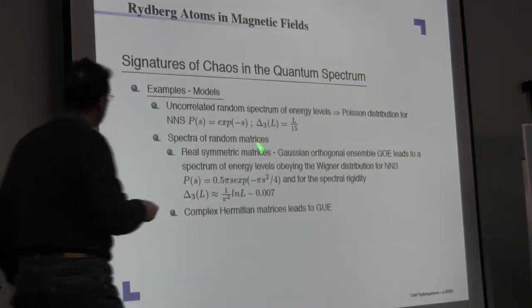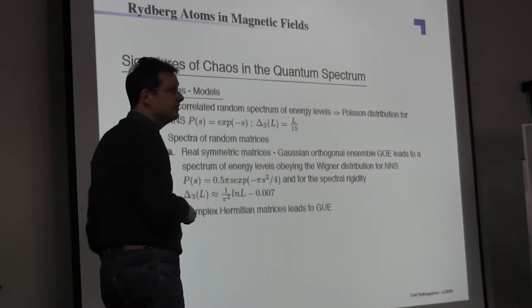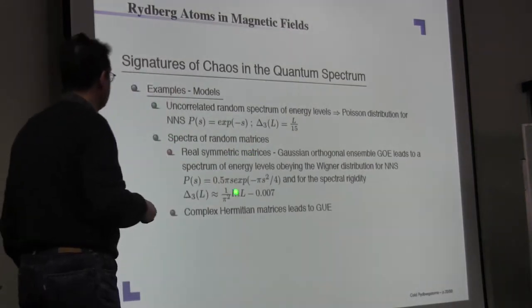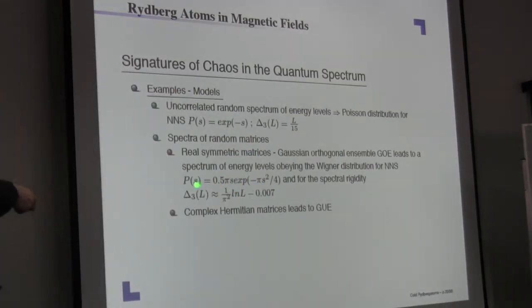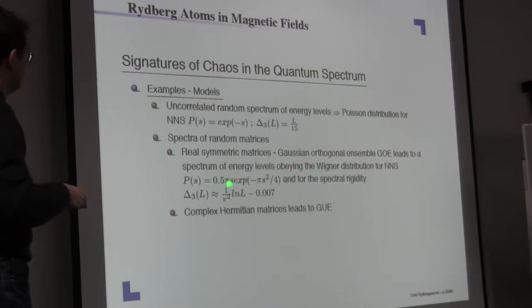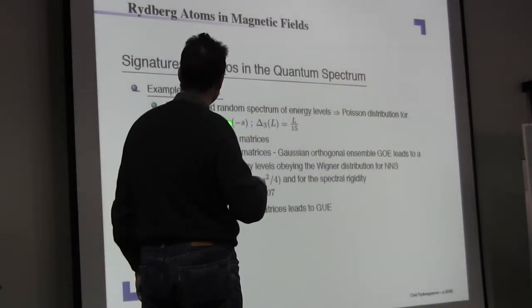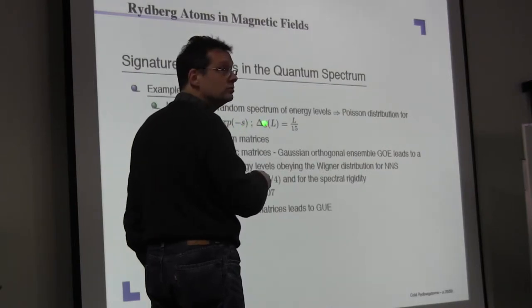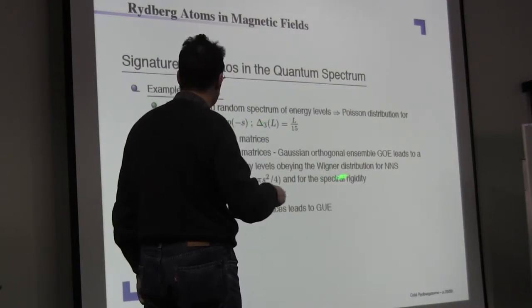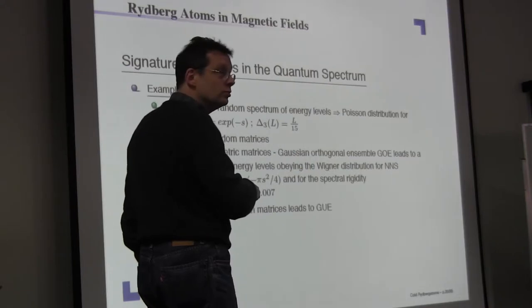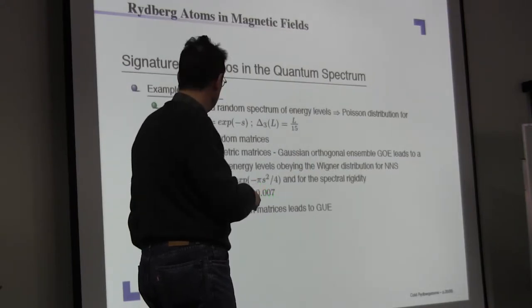If I have random eigenvalues, I should get a Poisson distribution for the nearest neighbor spacing. And if I have random matrices, then you can show that this leads to a Wigner distribution. This is s times a Gaussian. So the main difference between the two is P(s) has a peak at s equal to zero, and the Wigner distribution has a zero at s equal to zero.